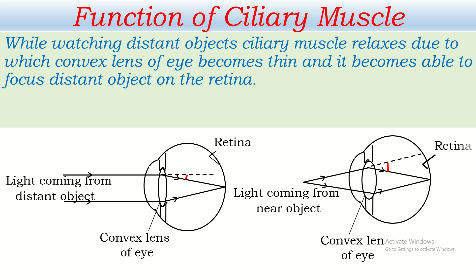Now while watching a near object, the light coming from it can be considered to be diverging rays, which when entering into the convex lens of the eye are converged and the image forms on the retina. But for this, the converging capacity of the lens should be more than in the previous case. For greater convergence, the ciliary muscle contracts and makes the convex lens of the eye thicker. A thick lens has high power, it converges the diverging rays of light with a greater angle and the object is focused on the retina.